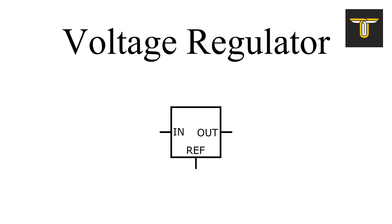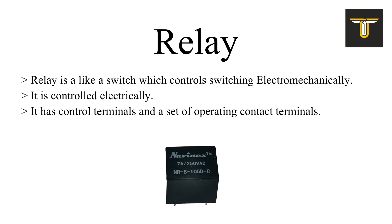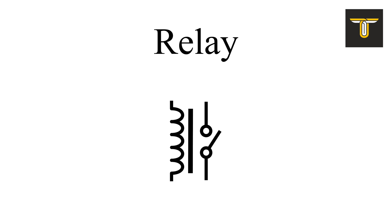The symbol of the voltage regulator looks like this. A relay is like a switch that controls switching electromechanically. Its main function is to make or break a connection just like a normal switch, but it is controlled electrically. A relay has control terminals and a set of operating contact terminals, and the symbol of the same is this.